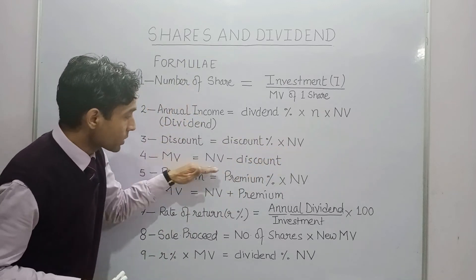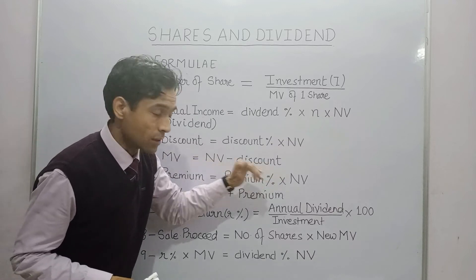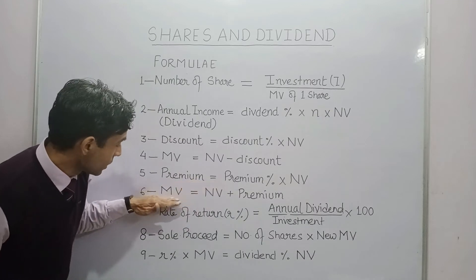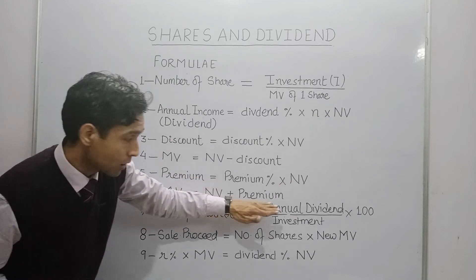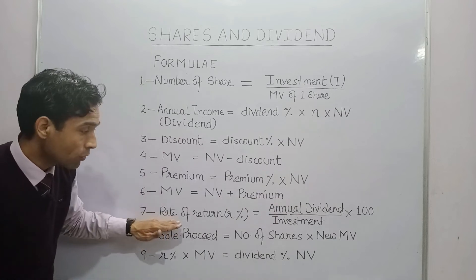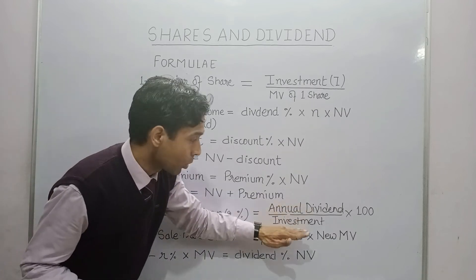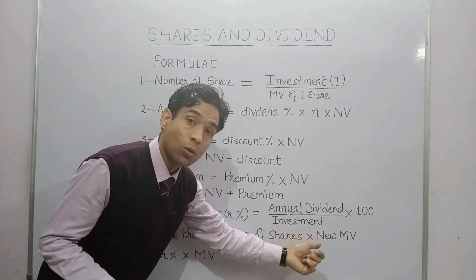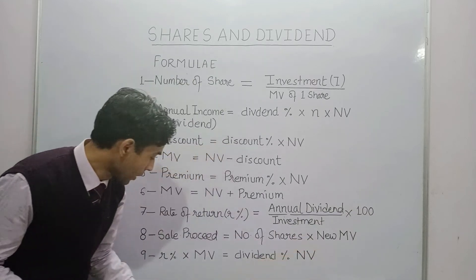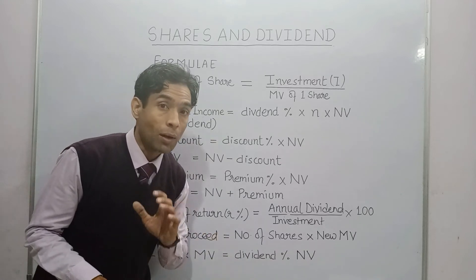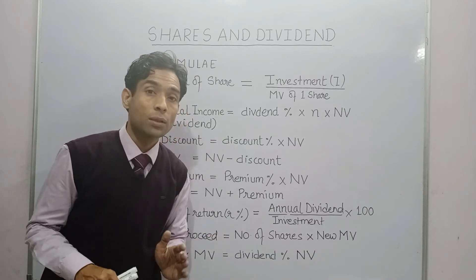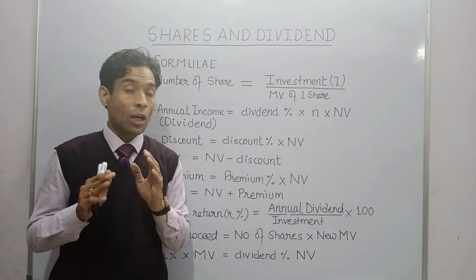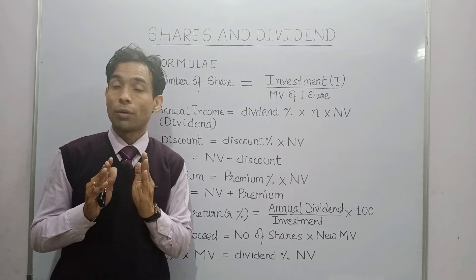Formula three: discount = discount percent × nominal value, used to find market value = nominal value minus discount. Formula four: premium = premium percent × nominal value, and market value = nominal value plus premium. Formula five: rate of return = annual dividend divided by investment × 100. Formula six: sale proceeds = number of shares × new market value. Formula seven: rate percent × market value = dividend percent × nominal value.